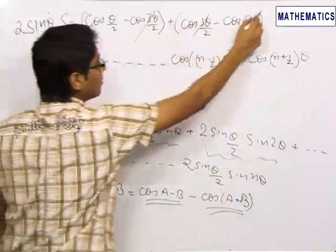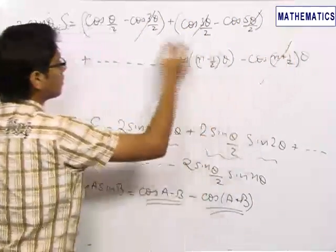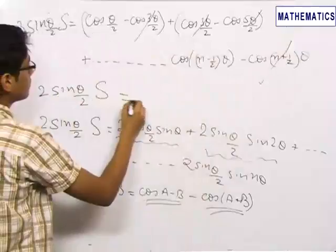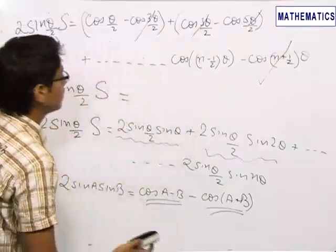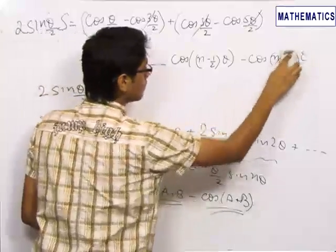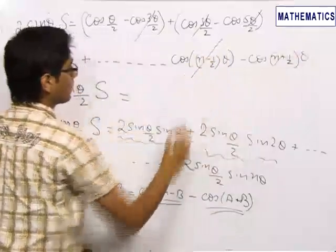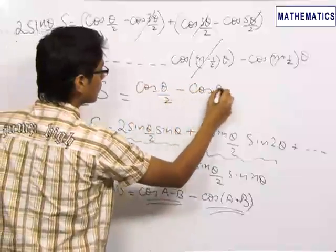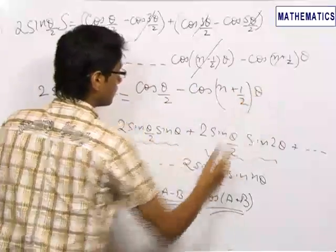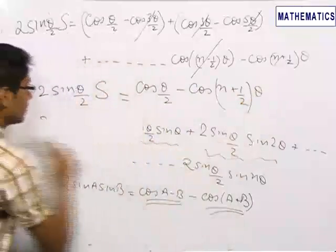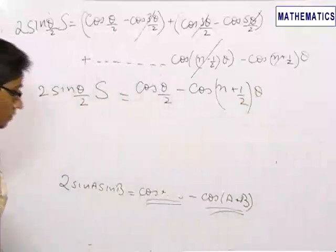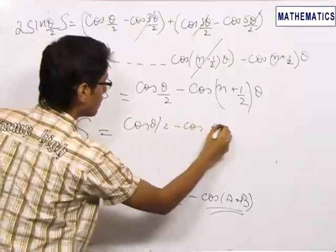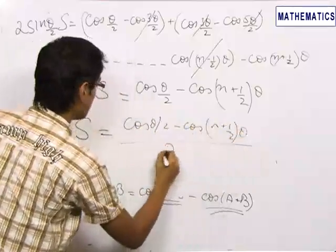Due to telescoping, intermediate terms get cancelled out with the previous term. So we are left with cos(θ/2) minus cos((n + 1/2)θ). Therefore the sum S equals [cos(θ/2) − cos((n + ½)θ)] divided by 2·sin(θ/2).